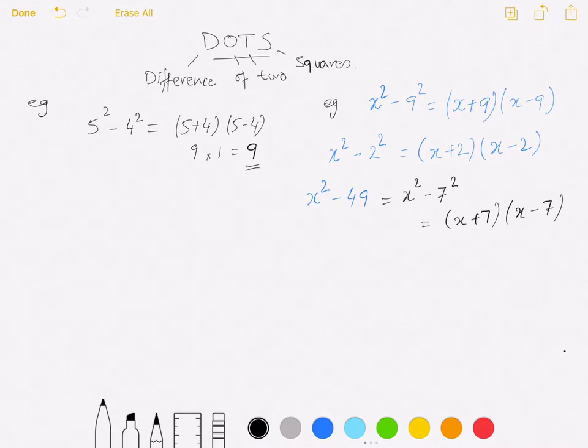I can stretch this topic by introducing another number in front of x squared. For example, 4x squared minus 49. Now you should understand that 4x squared is 2x whole squared minus 7 squared, and then my answer becomes 2x plus 7 and 2x minus 7.